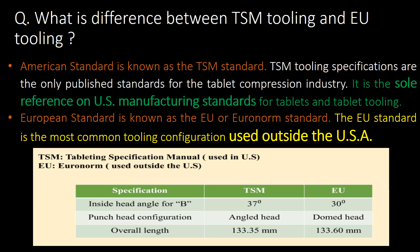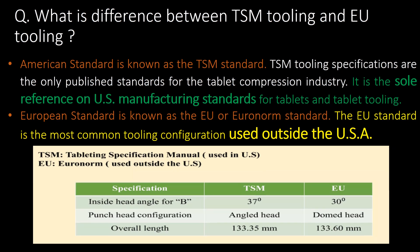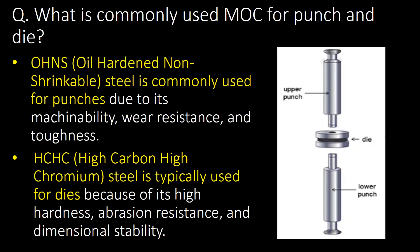You can refer to the table below for specifications of TSM and EU tooling. What is the commonly used MOC for punch and die? OHNS — that is, oil hardened non-shrinkable steel — is commonly used for punches, whereas HCHC — that is, high carbon high chromium steel — is commonly used for dies.